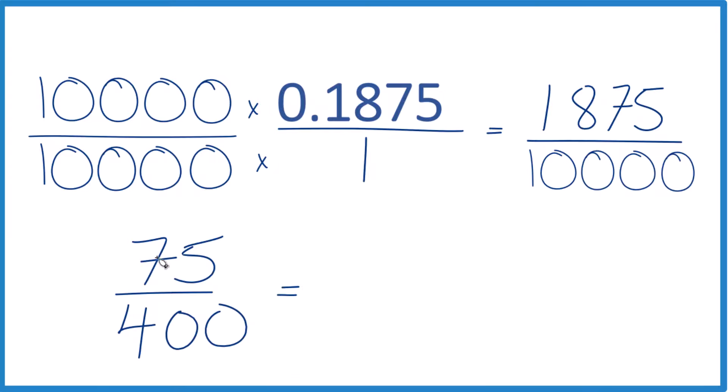So a little bit better, but we can still simplify this more because 25 goes into 75 three times, and 25 goes into 400 16 times. And 3/16ths, we can't reduce that any further. So when we write the decimal 0.1875 as a fraction, we end up with 3/16ths.